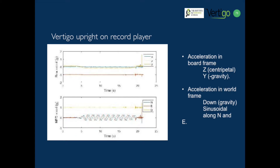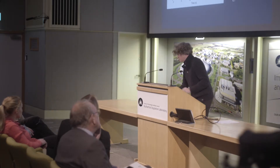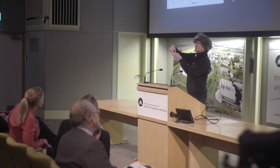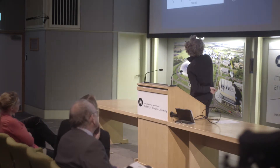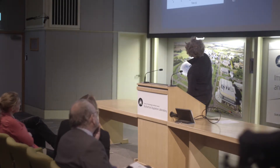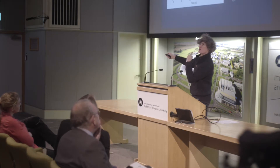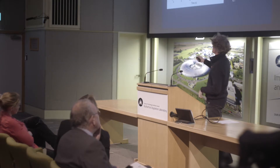So this is the first graph with Vertigo upright. This is the type of data that you would get out of a normal data logger — position. You can see that you've got minus one G of acceleration in the Y direction, so that's the board's frame of reference vertically down. But you have this constant acceleration in the Z direction, which when it's rotated upwards would be like this — that's our constant centripetal acceleration whilst it's on the record player, which rotates at a fairly constant rate.